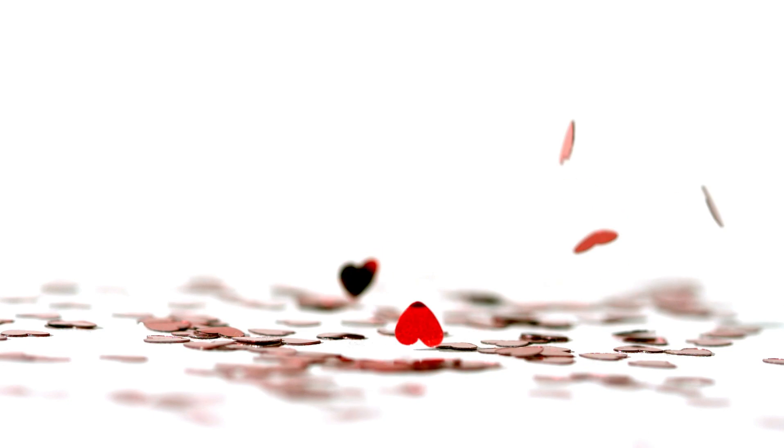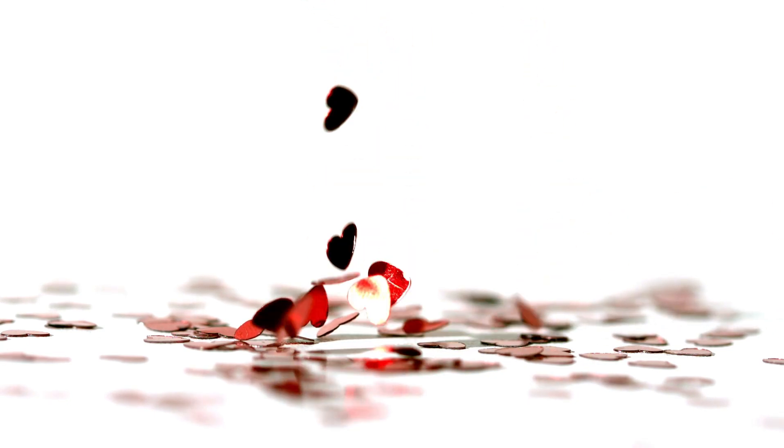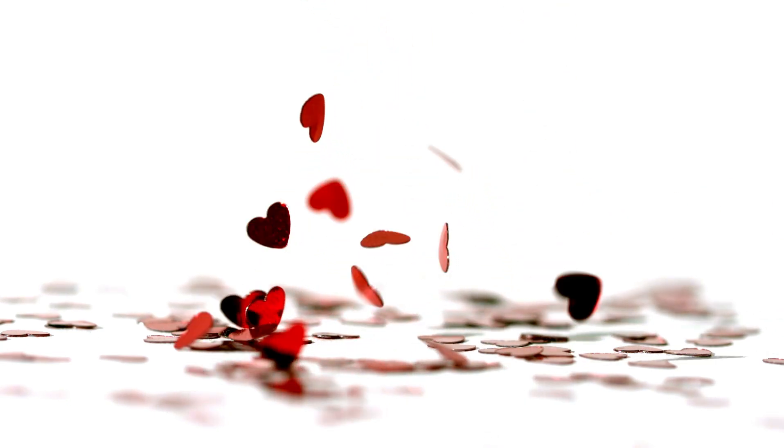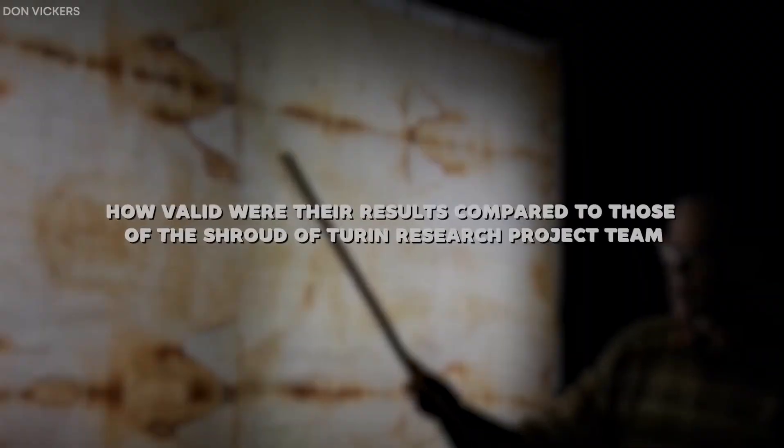The blood patterns reveal key facial details. An 8cm long nose bent to one side, evidence of a broken nose. Both cloths show wounds on the cheek and scalp, injuries from a crown of thorns. And here's the final proof.